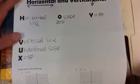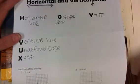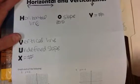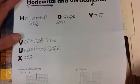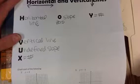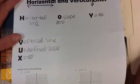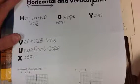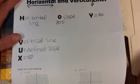So HOY and VUX: HOY — Horizontal, zero slope, Y equals a number. VUX — Vertical line, undefined slope, X equals a number.